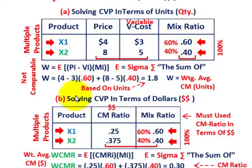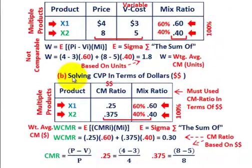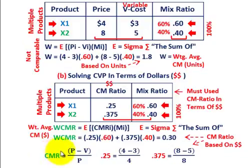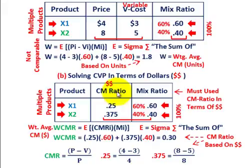That was Case A based on units. Now let's look at solving cost volume problems in terms of dollar amounts. You can't just take price versus variable cost times the mix ratio. You have to come up with it in terms of dollars. The contribution margin in terms of dollars would be price versus variable cost divided by the unit price — that gives us the contribution margin ratio.